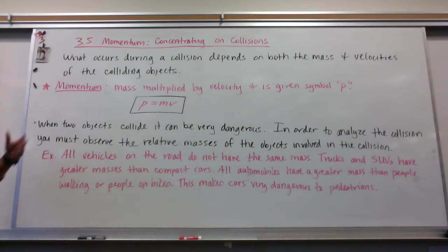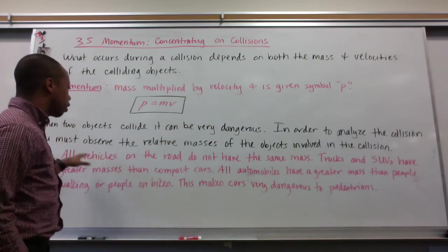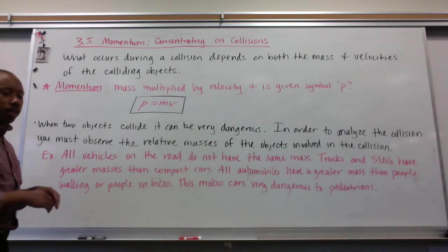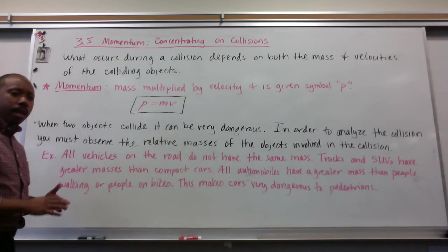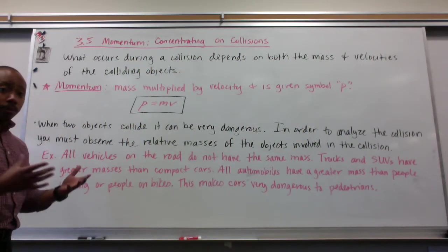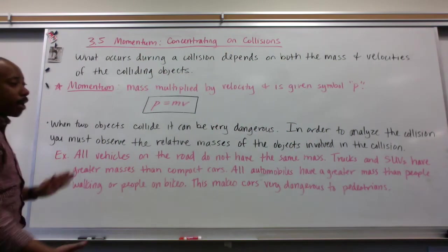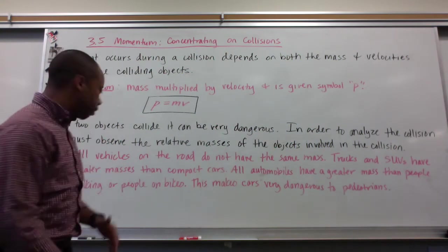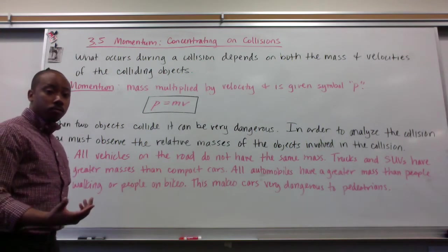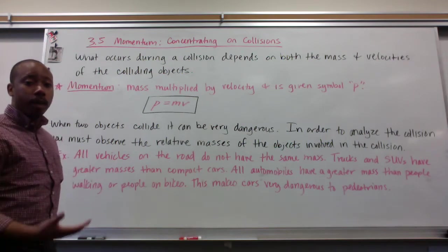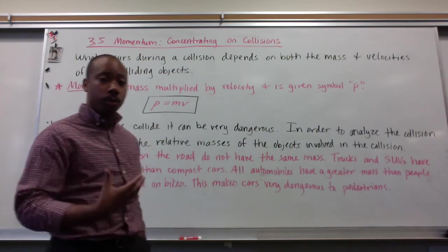When two objects collide, it can be very dangerous. In order to analyze this collision, we must focus on the relative masses of the objects involved. It's not always the same scenario every time — all different objects have different masses. For example, trucks and SUVs have greater masses than compact cars, and all automobiles have greater masses than people walking or people on bikes. This makes cars very dangerous to us pedestrians.